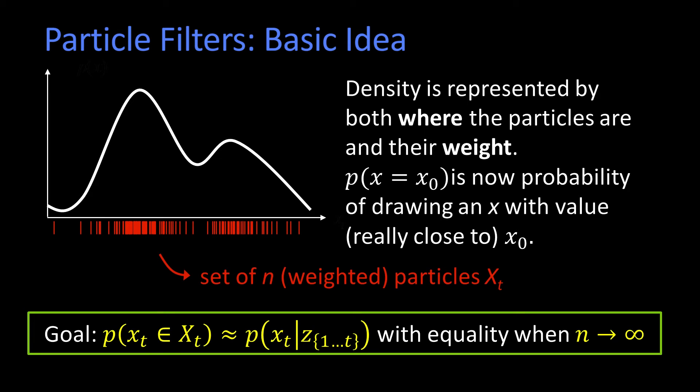And our goal is so that as we're doing this tracking, eventually we have a set of particles such that the probability that you get a particle at some particular place is essentially the probability that the state is actually at that place having observed all the observations.